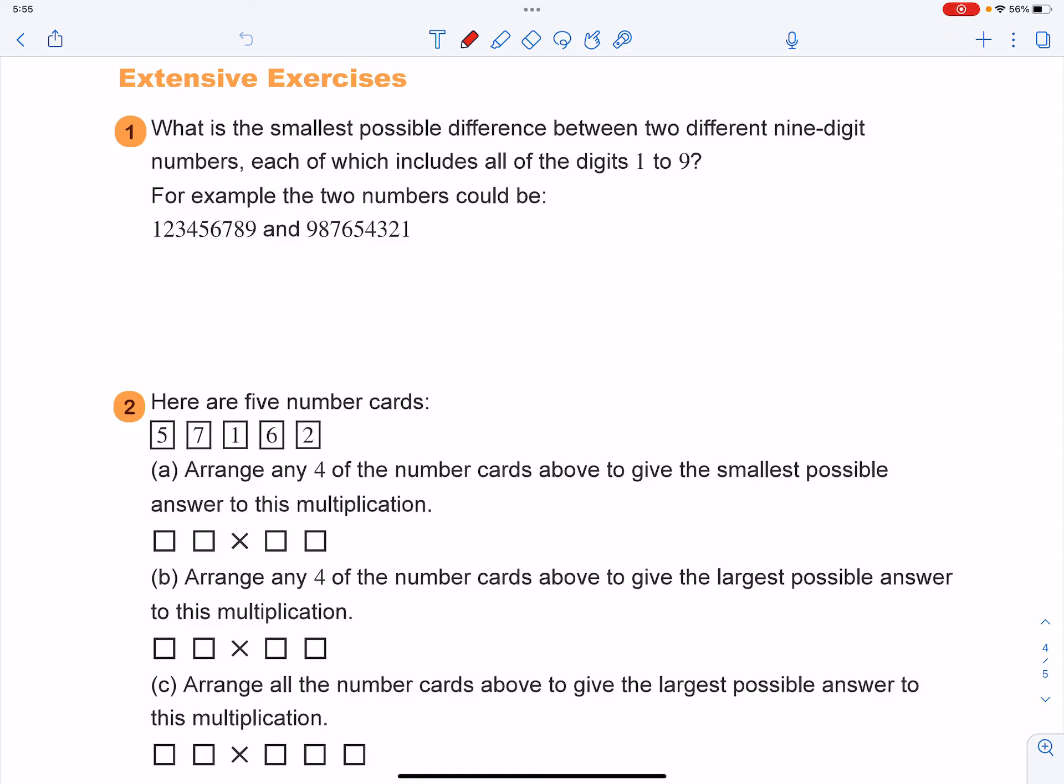Question number one from the extensive exercises is: what is the smallest possible difference between two different nine-digit numbers, each of which includes all of the digits 1 to 9? For example, the two numbers could be these two.